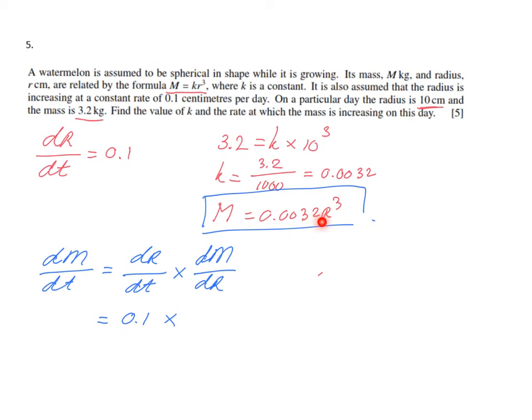I know that M equals 0.0032 r³, so let's find dm/dr. We're going to find the derivative of that function, which is 3 times 0.0032, and that is 0.0096 r².